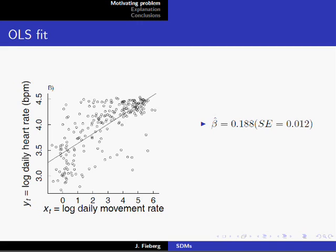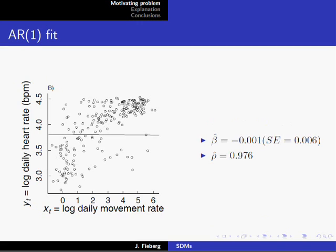However, the errors are autocorrelated out to many lags. So the next thing Mark did was try and fit a model that assumed that the errors followed an AR1 structure. And when he did this, the slope was estimated to be very close to zero, which was puzzling given the strong positive correlation between the two time series. In addition, the autocorrelation parameter was estimated to be very close to one.